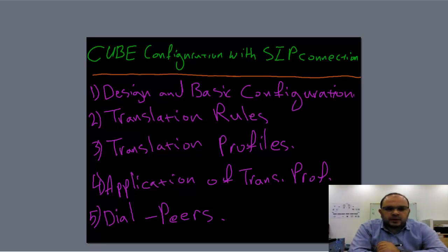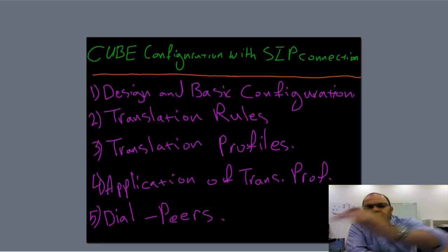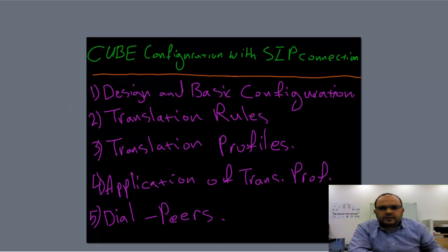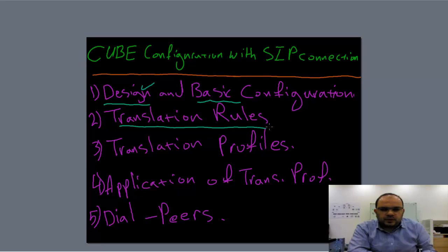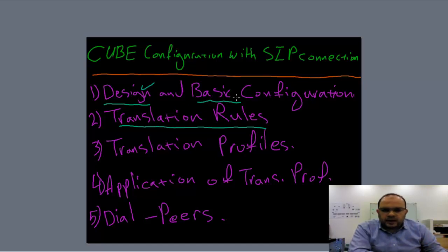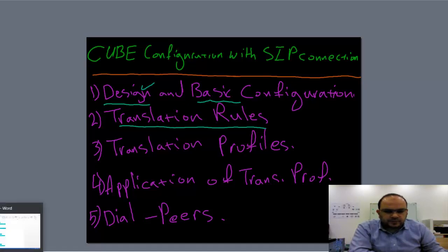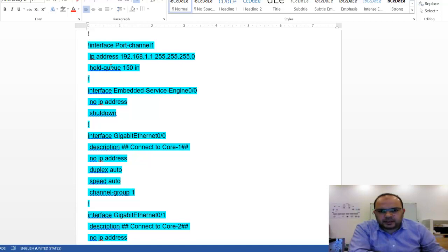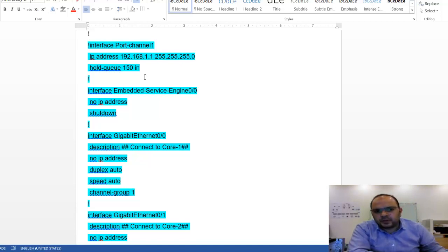We finished part one, so in this part of the video we will speak about basic configuration and translation rules. The design is already finished. Now let's look at the basic configuration — I'll take you to my config file and explain command by command what each one means.